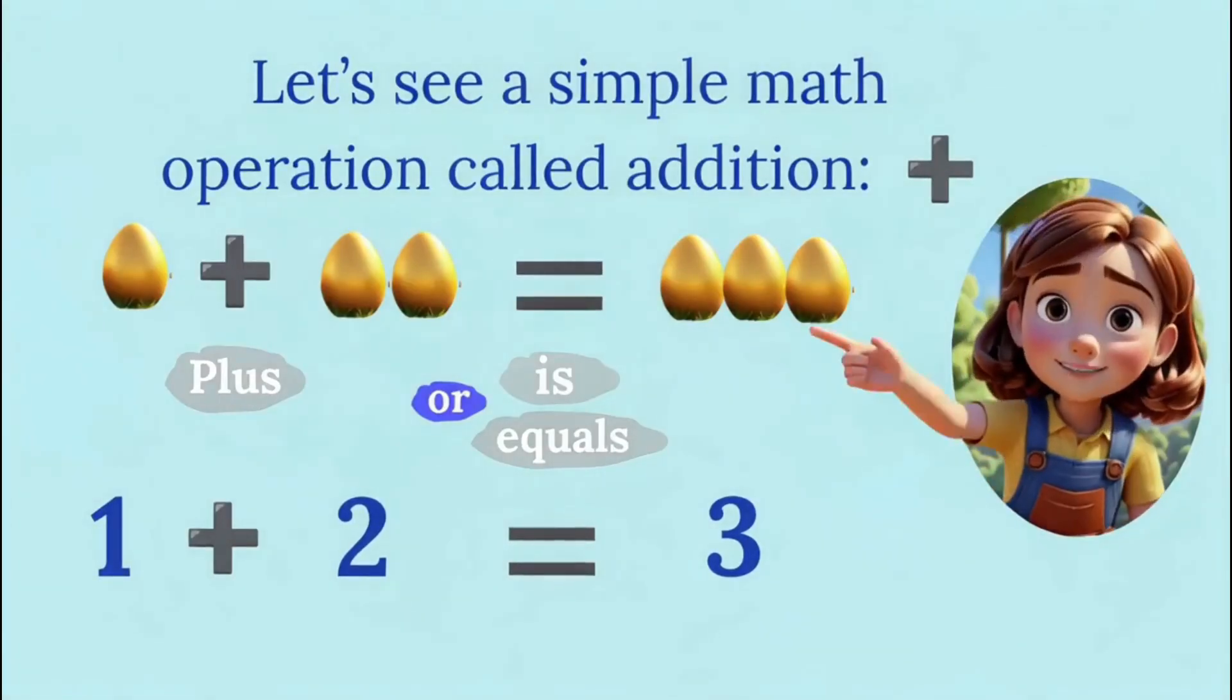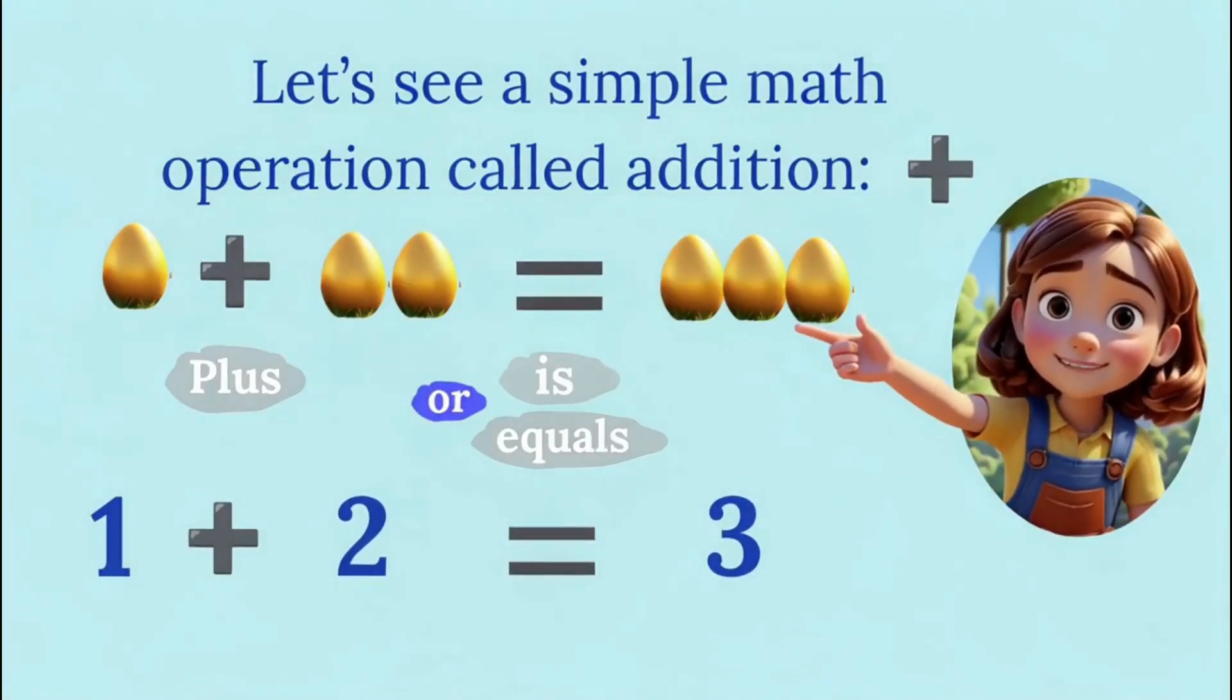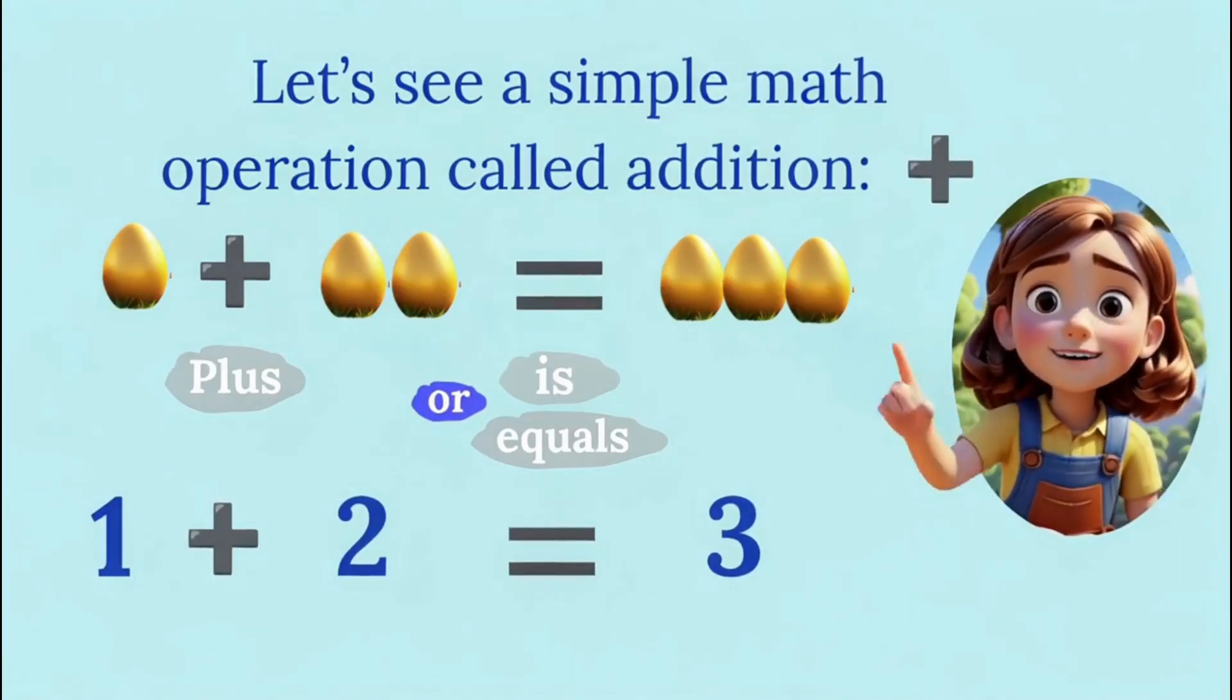Here's an example. One plus two equals three. That's right. One egg plus two eggs gives us three eggs.